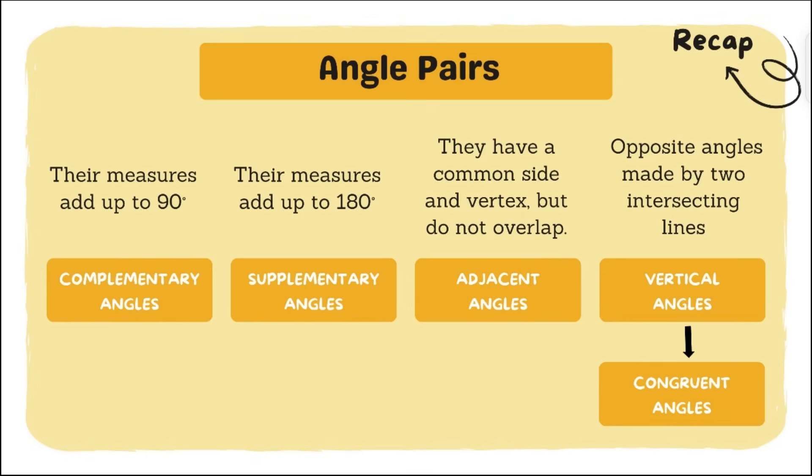And what's missing in our angle pairs? How about the linear pair? So linear pair is both supplementary angles and adjacent angles.